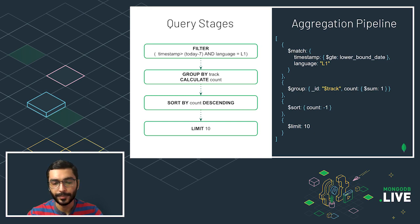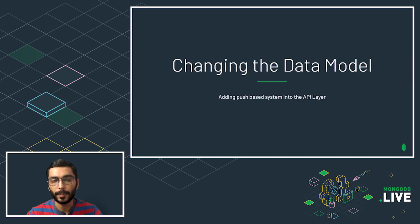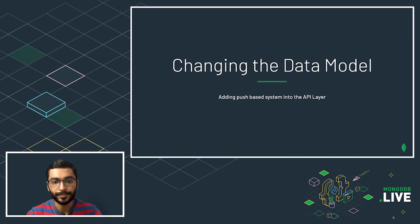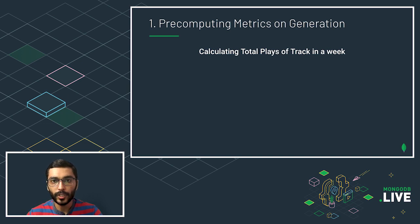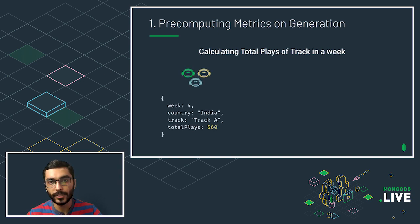To handle millions of queries per second, we change the data model by adding a push-based system into our API layer. The first technique is pre-computing metrics on generation. To calculate total plays of each track in a week, we pre-calculate it as events come into the system and store the result in a separate document — for example, for track A in India, a total of 560 plays.